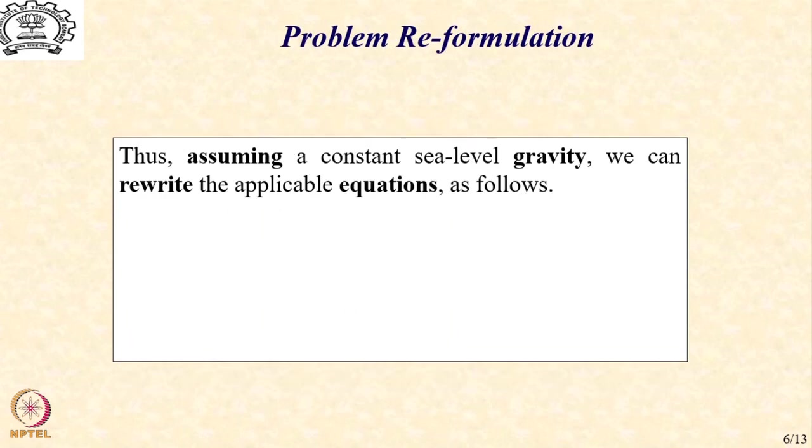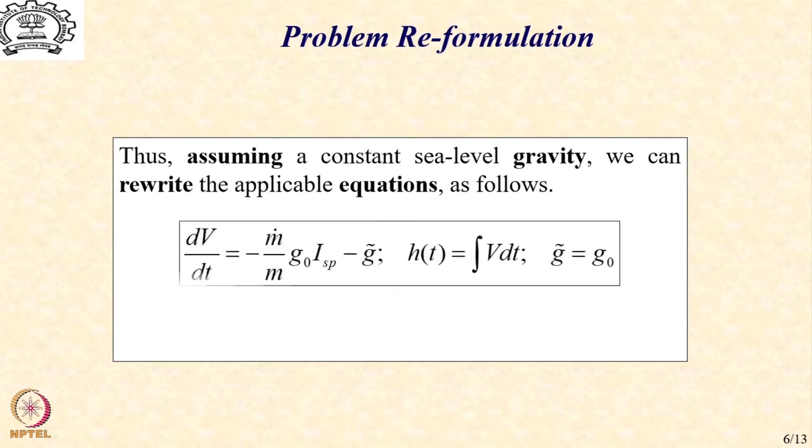So, let us now reformulate this problem assuming that the gravity is a constant term and we will use the sea level value at some point. So that we can rewrite the applicable equations as dv/dt = -ṁ/m g0 Isp - g̃, and I have put a tilde on top of it to indicate that it is a constant value and that this constant can take different values in different contexts as per the requirement.